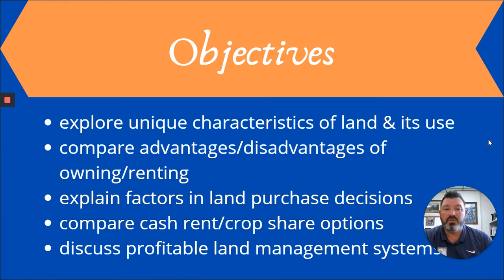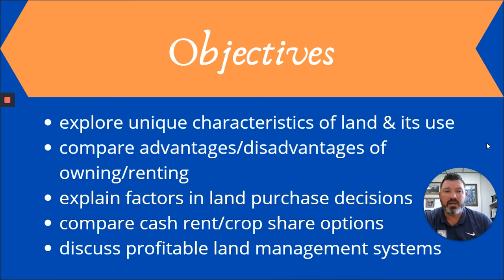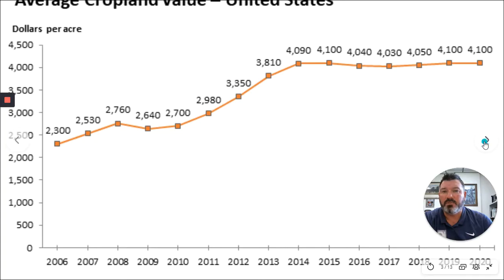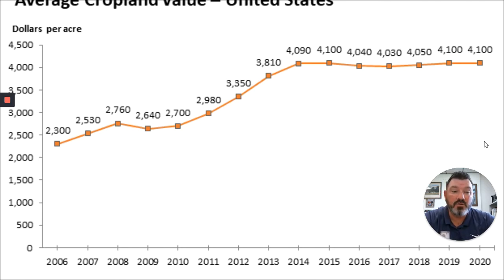I'll let you pause the video if you so choose and read the objectives we hope to accomplish in this section. Here's a chart over time from the United States Department of Agriculture National Agricultural Statistics Service. This is average land value — cropland value in the U.S. over the last basically 15 years.